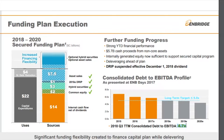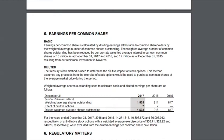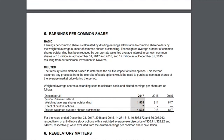The second reason is that share count is up significantly over the last few years, and further dilution makes it tough to hit per-share growth targets. Looking at the annual report from 2017, you can see that the share count has gone up from 847 million in 2015 to $1.5 billion in 2017.